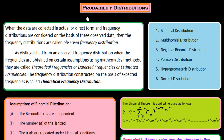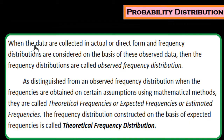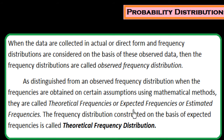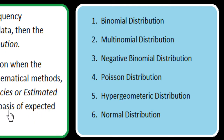Hi friends, in this session we studied about the probability distributions. When data are collected in actual direct form and frequency distributions are considered on the basis of observed data, they are called observed frequency distributions. When frequencies are obtained with certain assumptions using mathematical methods, they are called theoretical frequencies or expected frequencies or estimated frequencies. The frequency distribution constructed on the basis of expected frequencies is called theoretical frequency distribution.